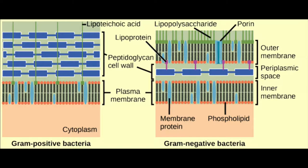In the case of gram positives, which you can see on the left hand side of the diagram, there's a very thick layer of peptidoglycan. In gram negative bacteria, that peptidoglycan layer is quite thin.